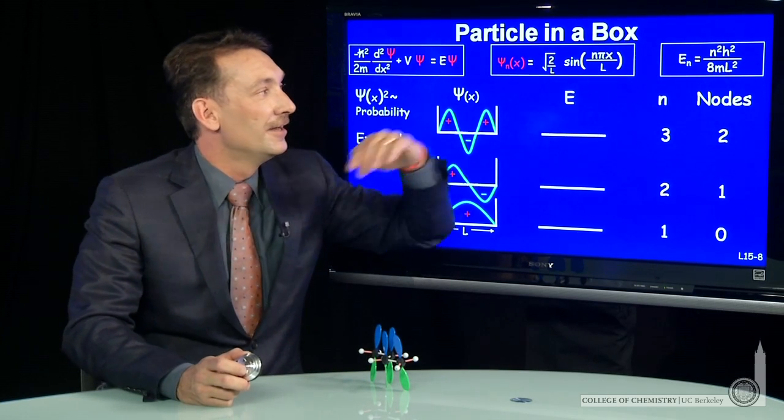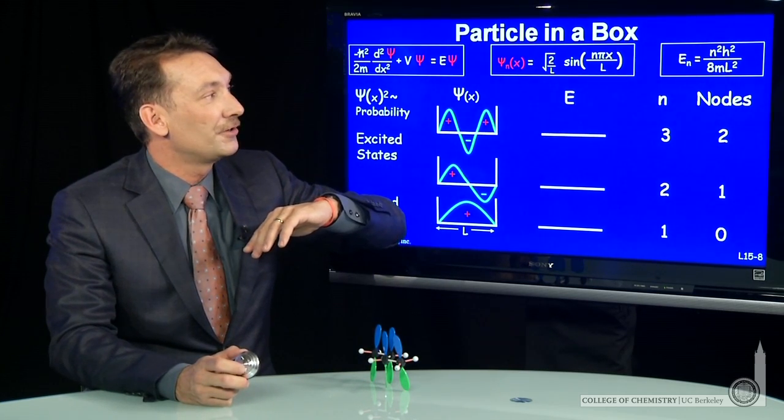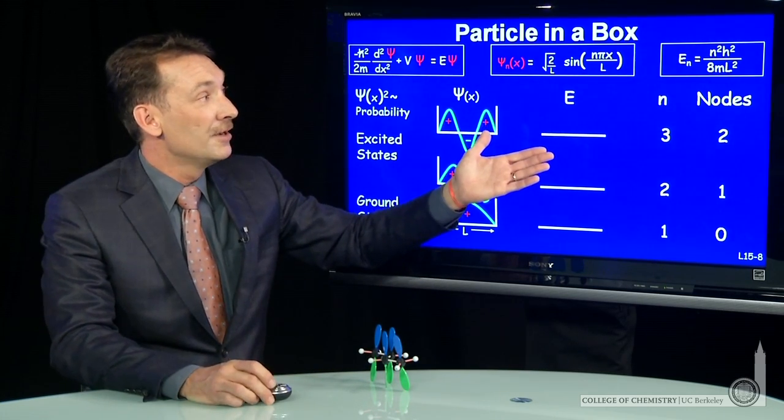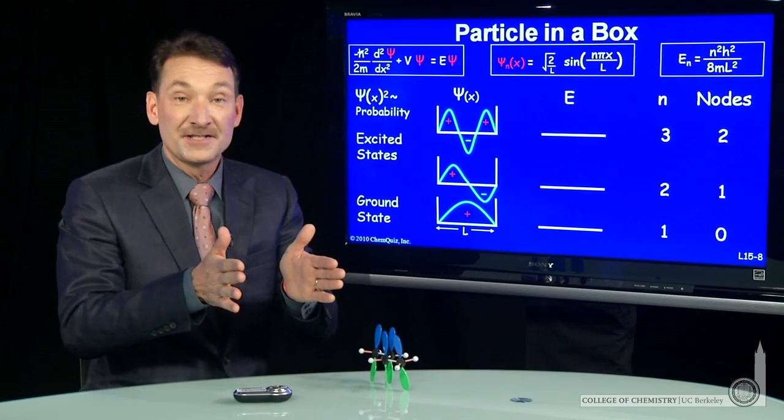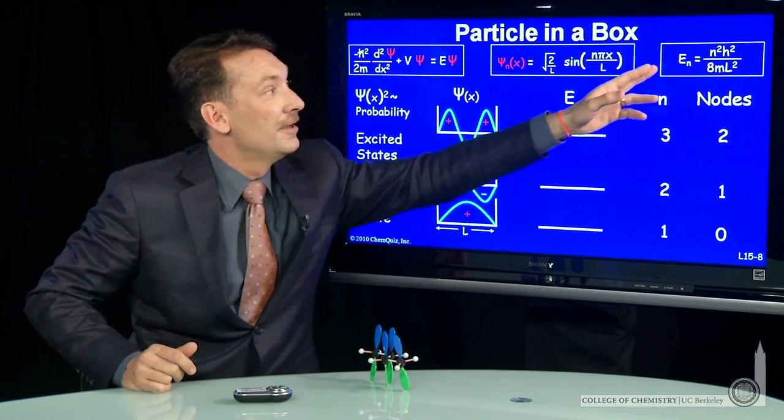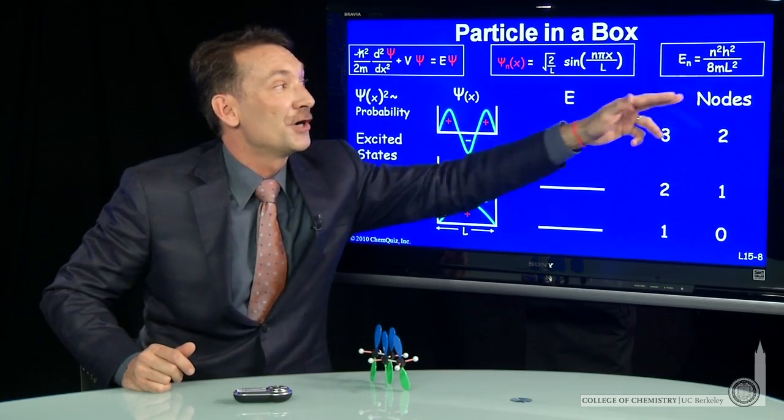So the energy levels for a particle in a box, we should remember a couple things. One is, as the box gets bigger, the energy levels go as n squared over l squared. Well, l is the length.